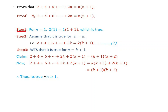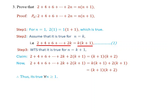Step 1: Using the Principle of Mathematical Induction, for n equal to 1, replace n by 1. Then 2 times 1 equals 2, which equals 1 into (1+1) equals 2, which is true. Step 2 assumes it is true for n equal to k. That means 2 plus 4 plus 6 plus ... plus 2k equals k into (k+1). Let this be equation 1.